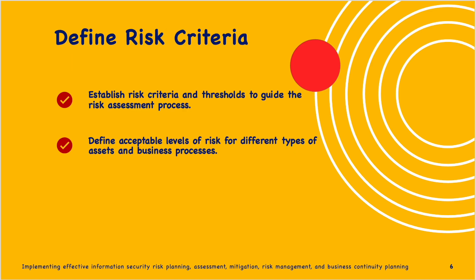The next step is to define risk criteria. Establish risk criteria and thresholds to guide the risk assessment process. Define an acceptable level of risk for different types of assets and business processes. Defining risk criteria is crucial in information risk planning — risk criteria establish the parameters and standards against which risks are assessed, categorized, and prioritized.